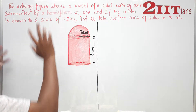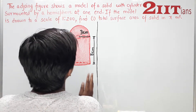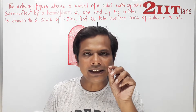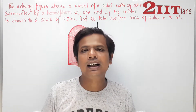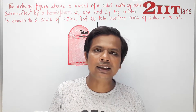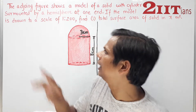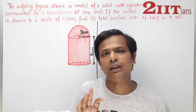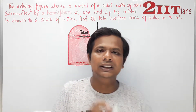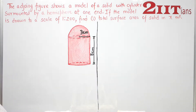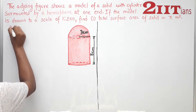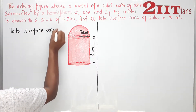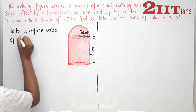First of all, we will work with the model, then we will reach the original dimensions. One important concept: if you have your textbook, there is a chapter on similarity. In the last exercise, scale questions are given. We will use that concept here. So here is the total surface area of the model.